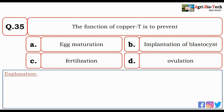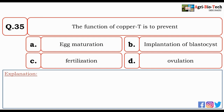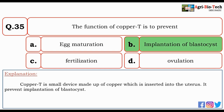Next question: the function of copper IUD is to prevent — egg maturation, implantation of blastocyst, fertilization, or ovulation? The correct option is B — implantation of blastocyst. A copper IUD is a small device made of copper inserted into the uterus, and it prevents implantation of the blastocyst.